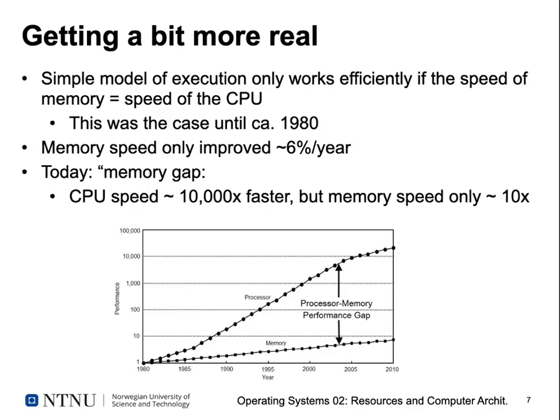All of this is pretty ancient technology — computers until the late 1960s or mid-1970s worked like this. But this simple model of execution only works efficiently if the speed of the memory is equal to the speed of the CPU, which was the case until about 1980. In 1980, both had the same speed: whenever the CPU required a new instruction, the memory could deliver it in time. They were synchronous and everyone was happy.